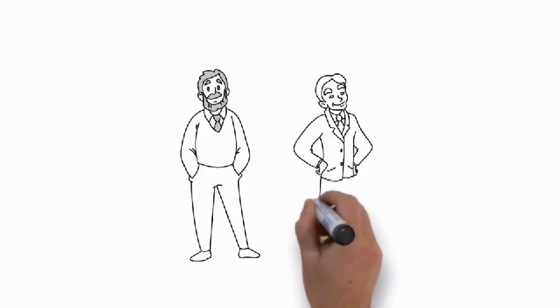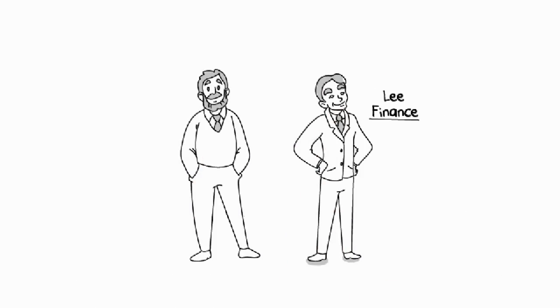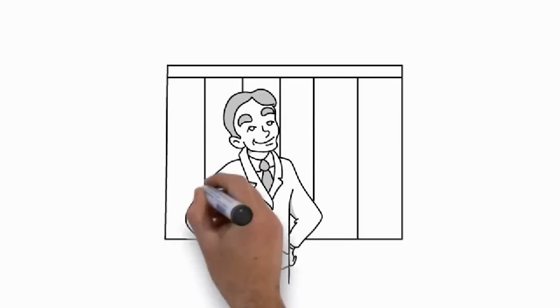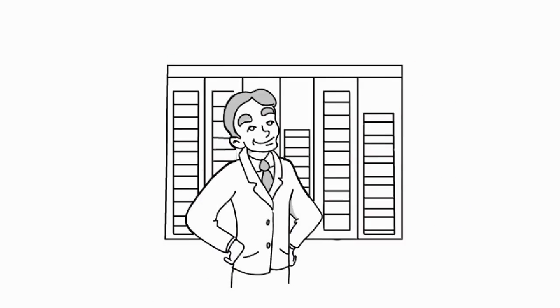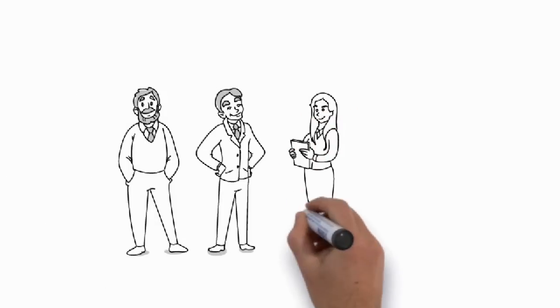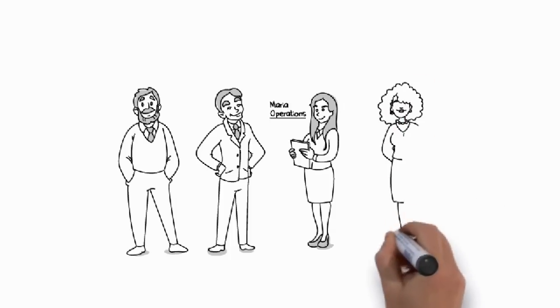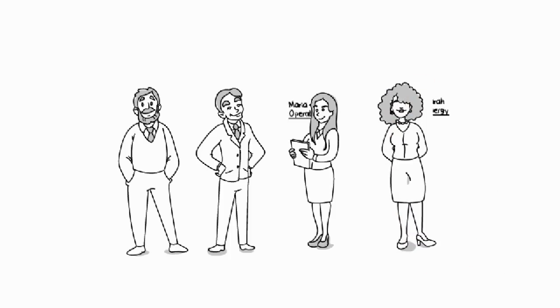Peter spends a lot of time working with Lee, who heads up finance. It's up to Lee to make sure operating costs don't go up, budgets are met and risks to the company are mitigated. Peter and Lee often work together with Maria, who is in charge of operations, and Sarah, who is responsible for energy within the company,